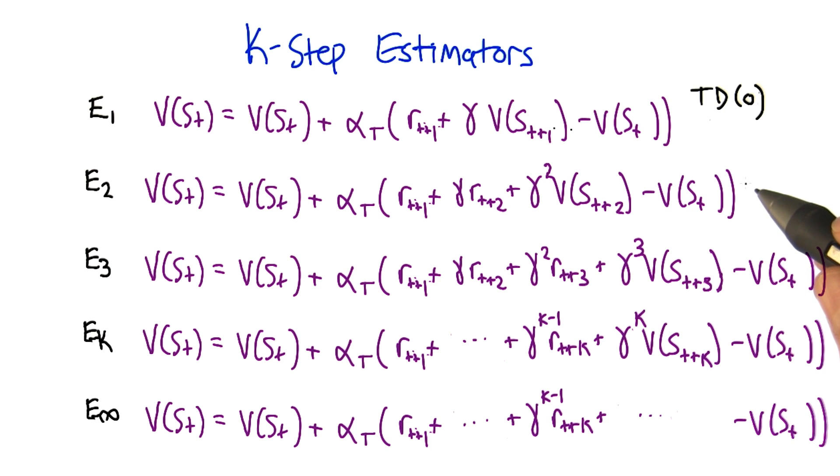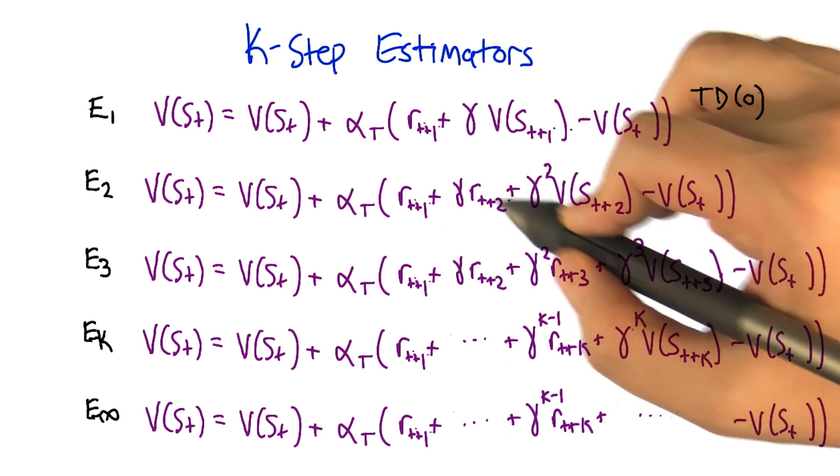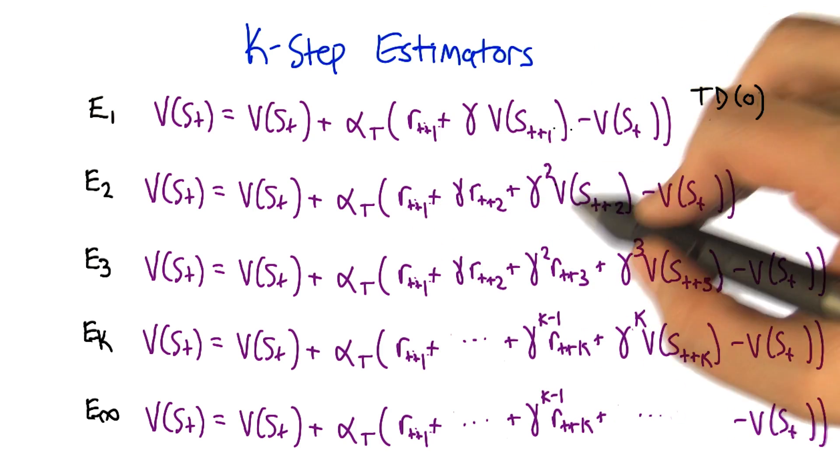No, that makes sense. So if E1 is a one step look ahead, then E2 is a two step look ahead. Yeah. Yeah, or yeah, exactly. So we use two steps, two real steps, followed by this kind of look ahead thing.